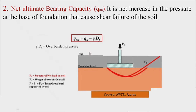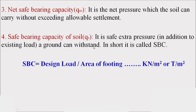Where gamma is the unit weight of the soil and D_f is the depth of the footing. The third term is net safe bearing capacity, designated q_ns. It is the net pressure which the soil can carry without exceeding allowable settlement — mainly occurring due to the weight of the superstructure.